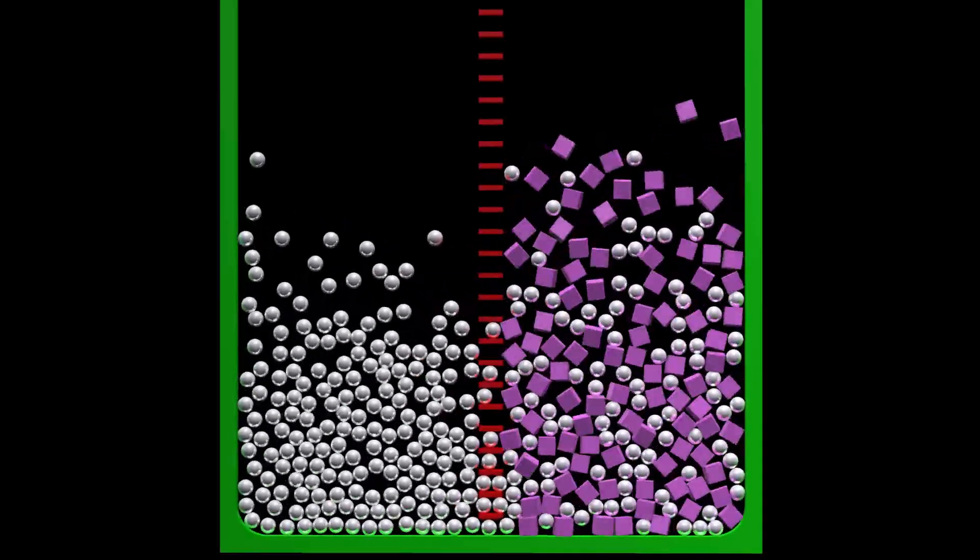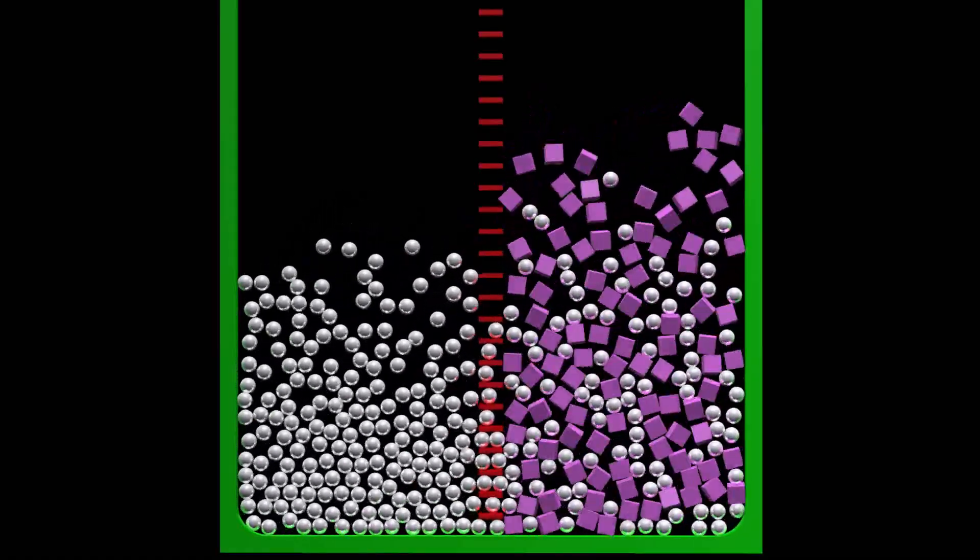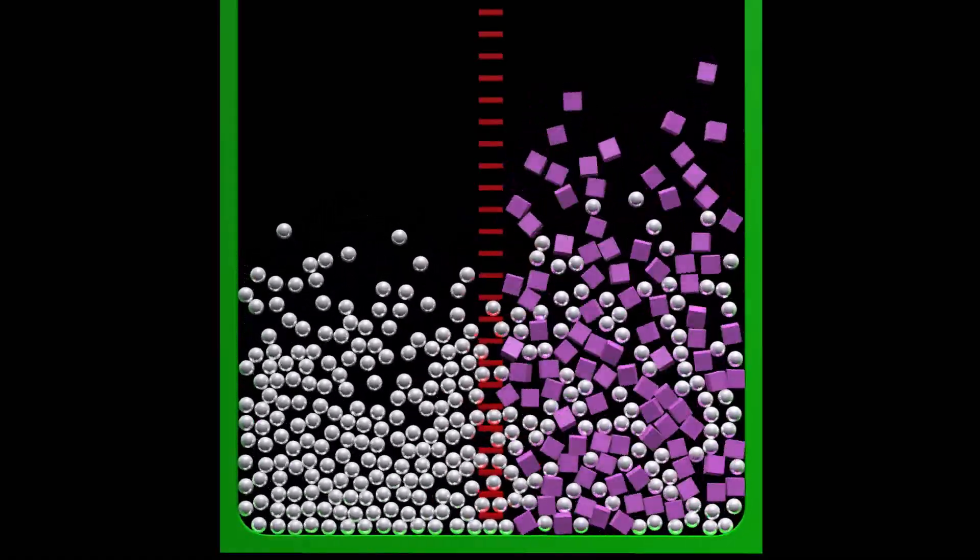The barrier in the center only allows the balls to pass through. The square particles are unable to cross the barrier.